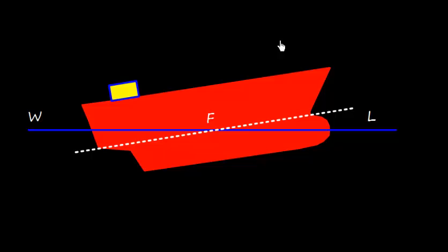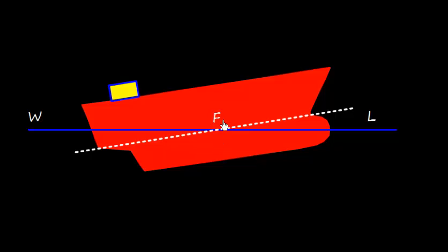Now let us consider the scenario where the center of floatation is not at midship. This is very much possible because of the shape of the ship — the geometrical center of the waterplane area could be different. So the geometrical center may not be exactly at midship, and the center of floatation could be a little bit displaced from midship.